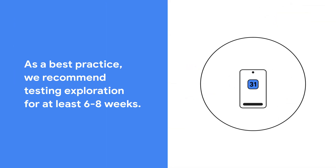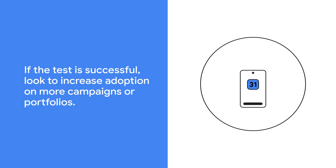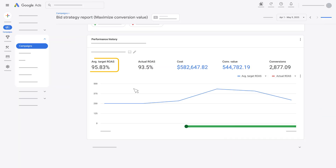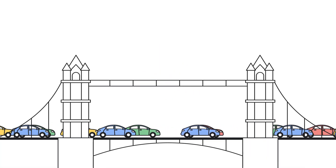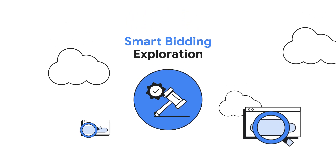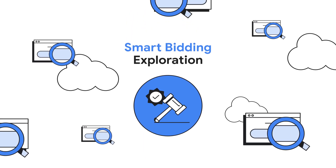As a best practice, we recommend testing exploration for at least 6 to 8 weeks. If the test is successful, look to increase adoption on more campaigns or portfolios. For a flexible ROAS target, reflected in the average target ROAS on the bid strategy report, you should see an increase in conversion volume. Smart Bidding Exploration is the tool that can help your search campaign find leads hidden in plain sight. Now you're ready to explore.